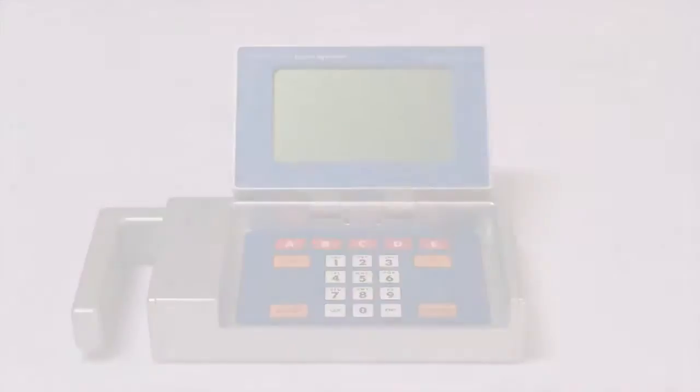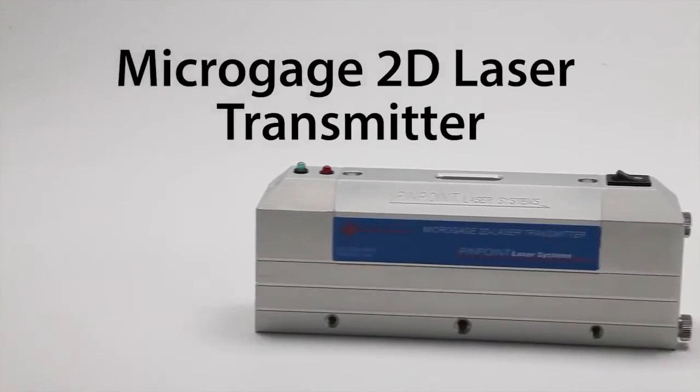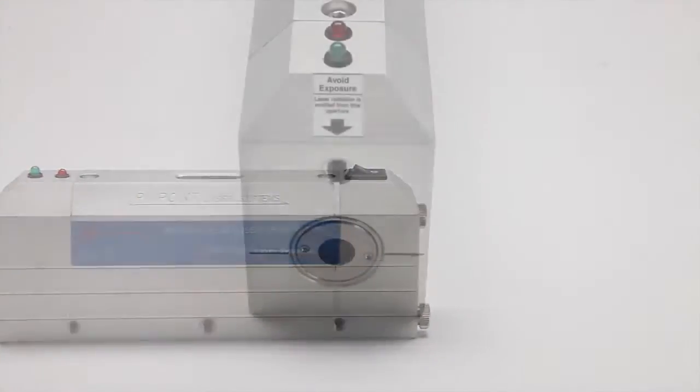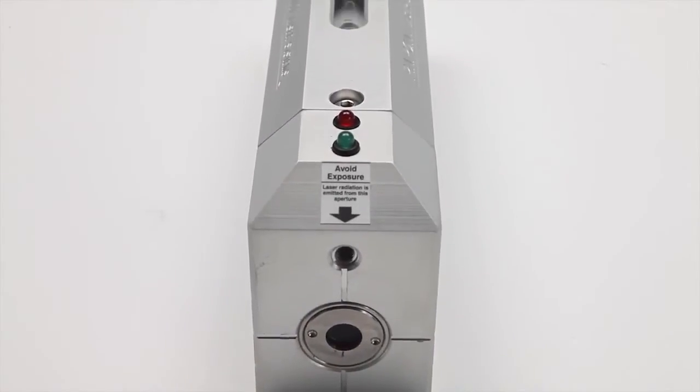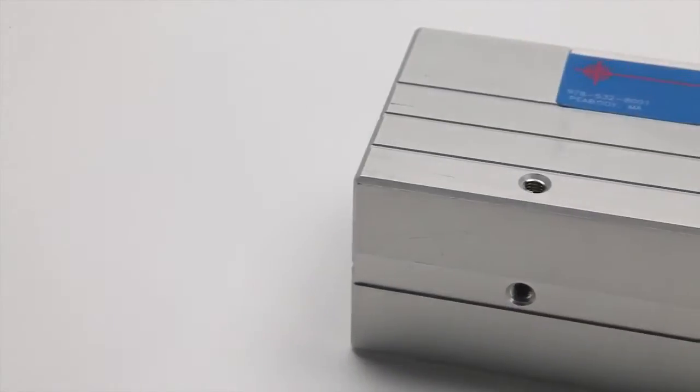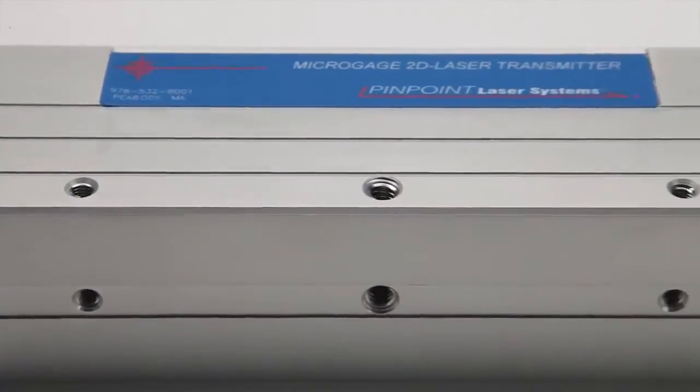The laser transmitter is approximately eight inches long, machined from a solid block of aluminum, and protected by a hard anodized finish. The base and sides of the laser housing have been machined flat and square, and can be used as reference surfaces.